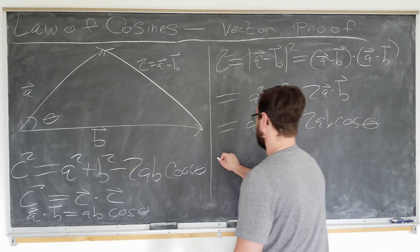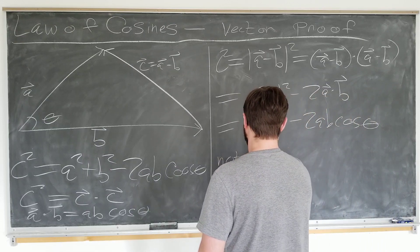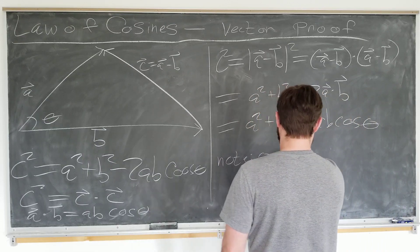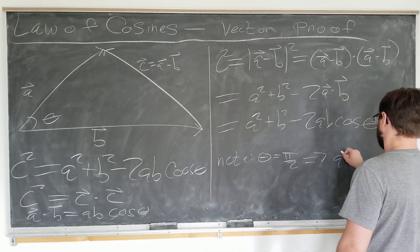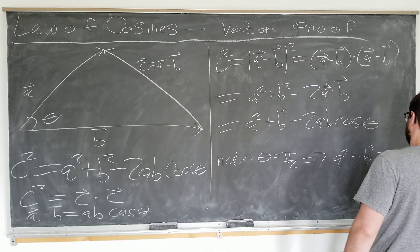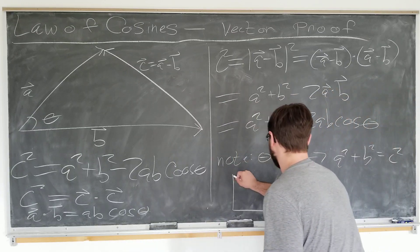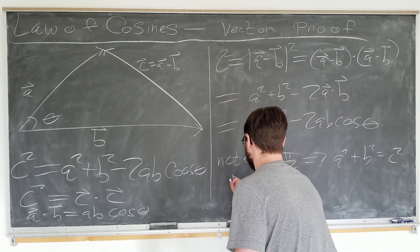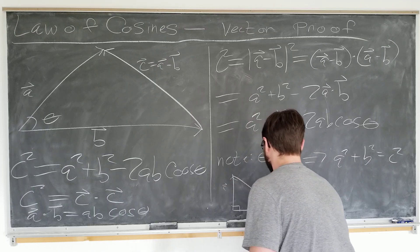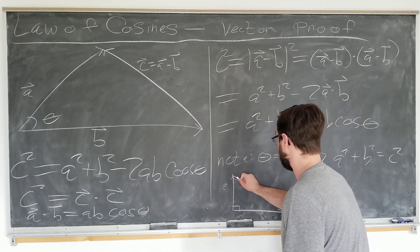Note, if we wanted to do theta equals pi over two, it would tell us that a squared plus b squared is equal to c squared, or the Pythagorean theorem for a triangle of vectors that looks like this: A, B, C.